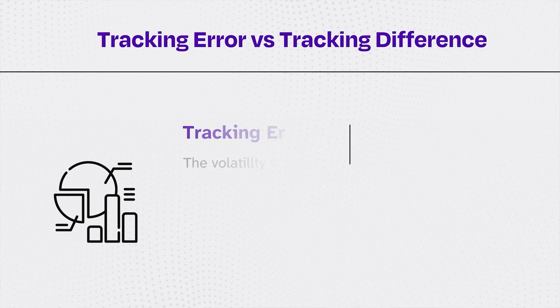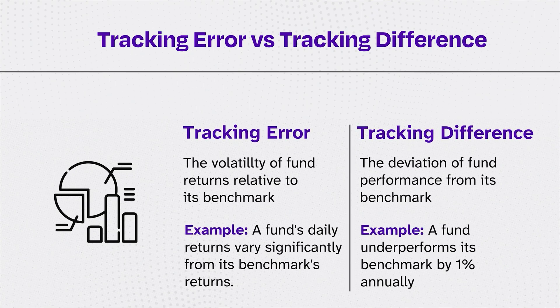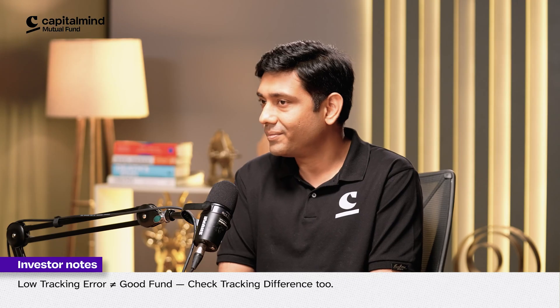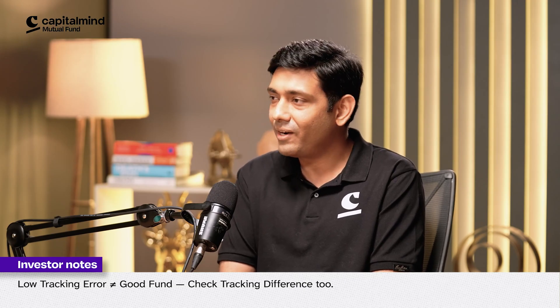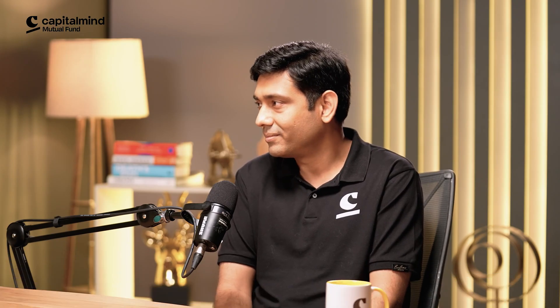One important note on tracking error versus tracking difference: many people by default look at only tracking error. For passive funds, you should look at tracking difference — that's the main thing. An index fund could be consistently 1% worse than the benchmark and have a tracking error of zero, but still have a tracking difference of 1%. Be mindful of these two numbers and when to use which one.